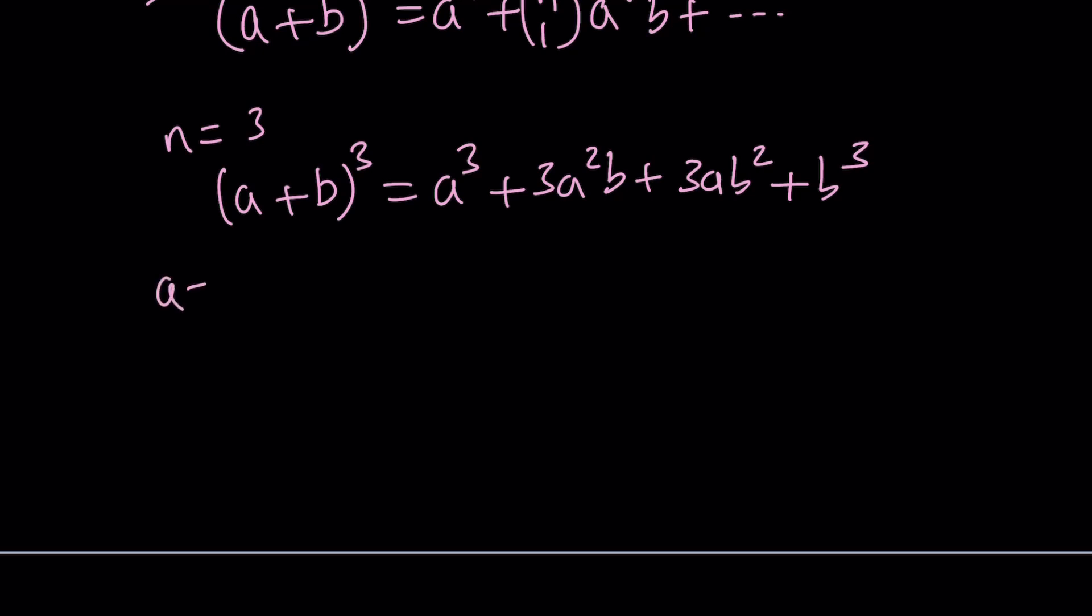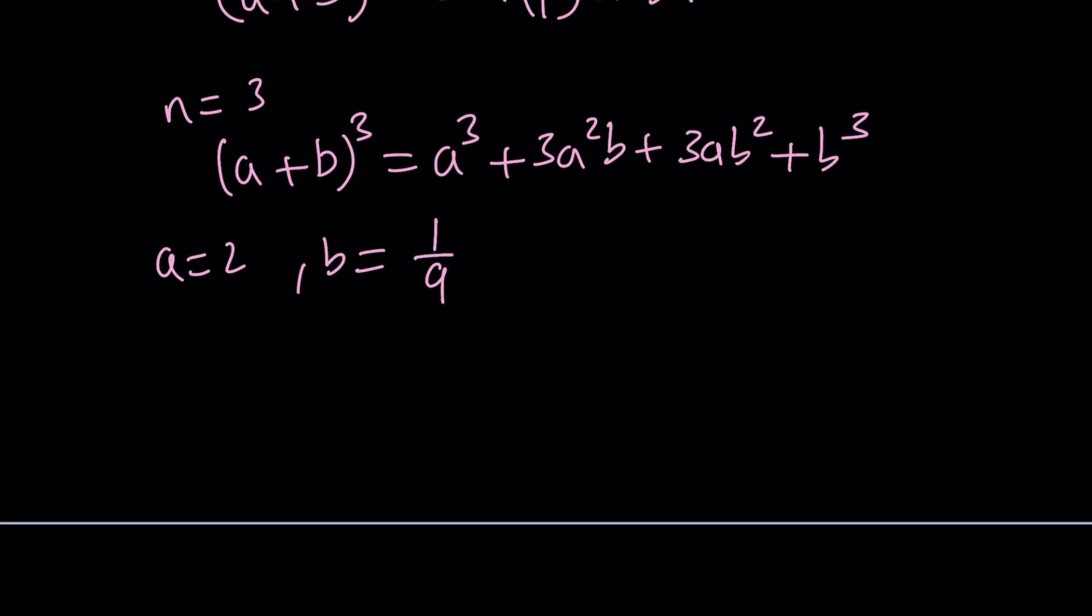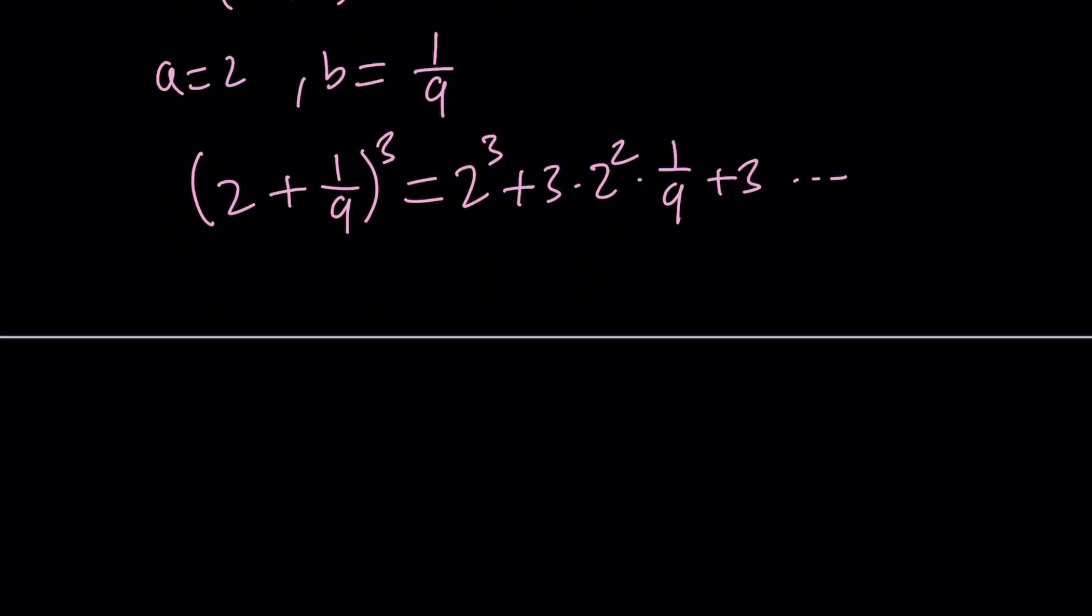Let's go ahead and pick a equals 2 and b equals 1 ninth. You'll see in a little bit why this is helpful. So from here we get the following: 2 plus 1 ninth. I'm going to raise it to the third power. And don't worry, you don't have to expand everything. If you want, you can, if you want to see the whole thing. But it's going to look like this.